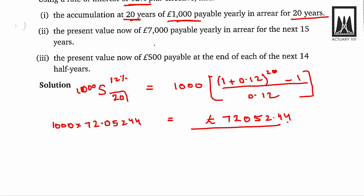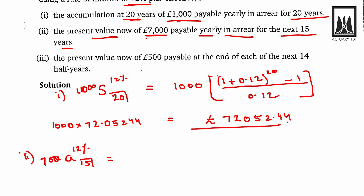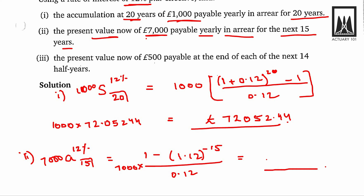Now find the present value of 7000 payable yearly in arrear for the next 15 years at 12% per annum. We need 7000 · a_{15|} at 12%. Using the formula: 7000 · (1 − 1.12^{−15})/0.12 ≈ 47,676.05 pounds.